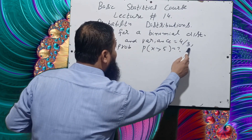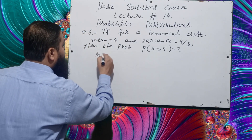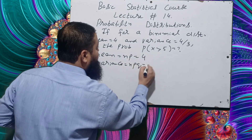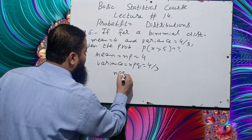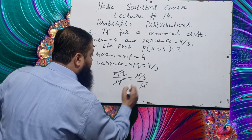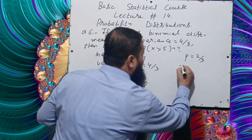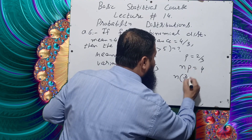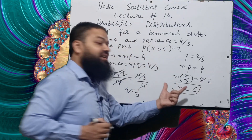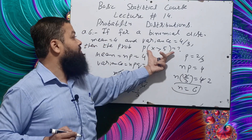Question number six: if for a binomial distribution mean = 4 and variance = 4/3, then find P(X > 5). We know mean NP = 4 and variance NPQ = 4/3. Dividing: Q = (4/3)/4 = 1/3, so P = 2/3. Substituting back into NP = 4: N × (2/3) = 4, so N = 6. This means X can be at most 6, so P(X > 5) = P(X = 6).